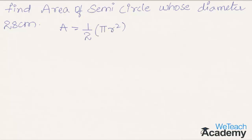In this formula we are using radius. However, in our example we have the diameter value. So the area of semicircle using diameter is given by the formula 1/2 × (π/4) × d².